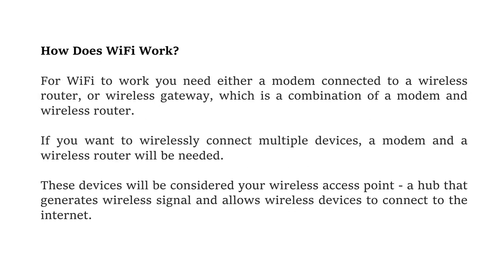Now we can see how Wi-Fi works and the devices that are needed. First, you need either a modem connected to a wireless router, or a wireless gateway — which is a combination of a modem and a wireless router. That is, a wireless gateway is a combination of a modem and a wireless router.